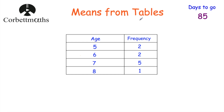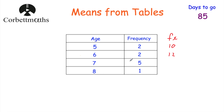Next, we're going to look at how to find the mean from a frequency table. We've got two five-year-olds, two six-year-olds, five seven-year-olds and one eight-year-old. Rather than writing the list out, we need a quicker way. So we add on an fx column — that's found by multiplying the frequency by the age. Five times two is ten, and six times two is twelve — so these two six-year-olds have a combined age of twelve years.